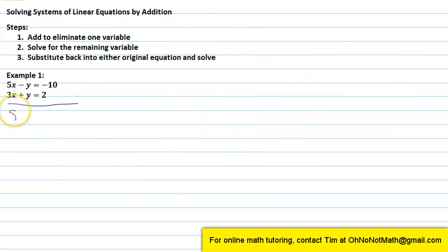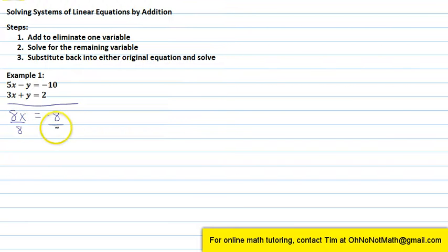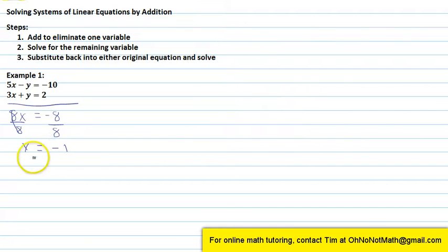5x plus 3x is 8x. Negative y plus y is 0. Negative 10 plus 2 is negative 8. Step two says solve for the remaining variable, so we want to solve for x. Divide both sides by 8 — these 8's cancel. We have x equals negative 1.